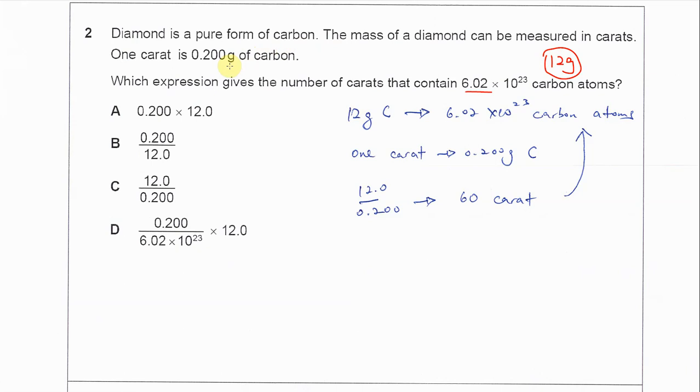This 12 grams must be divided by 0.2 grams, so it will be 60 carats. But this is the expression that's needed, so it's just 12 grams over 0.2 grams of carbon.